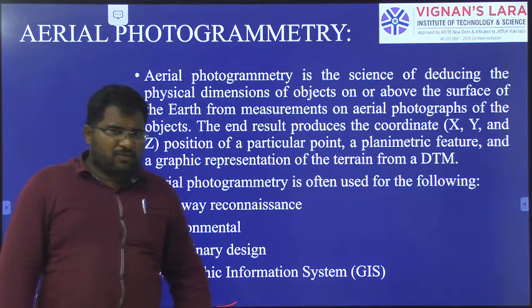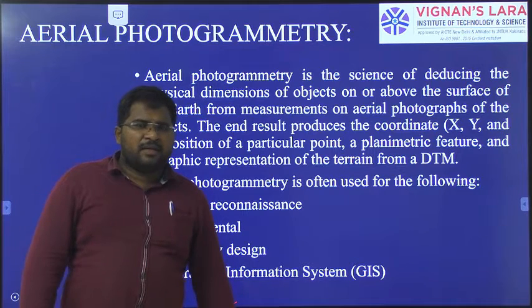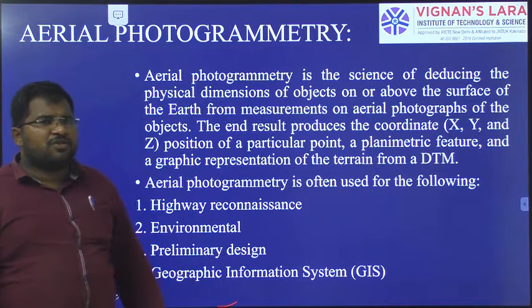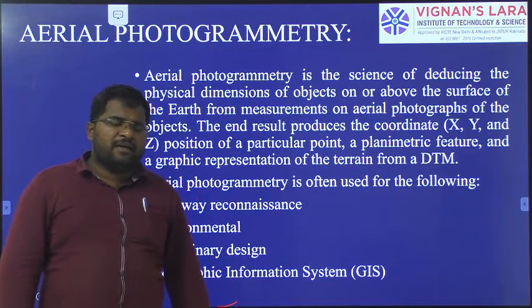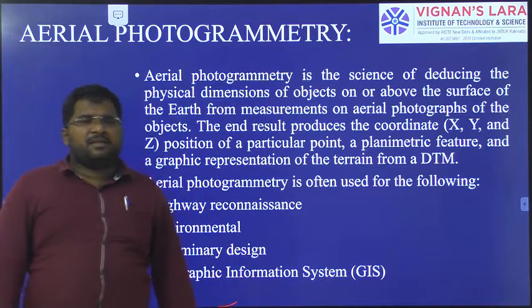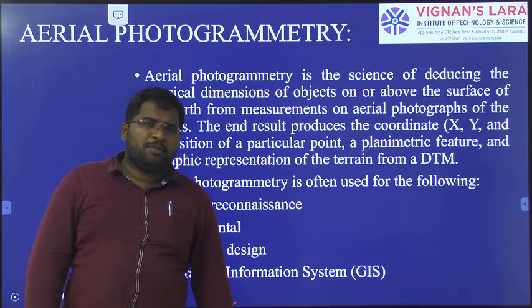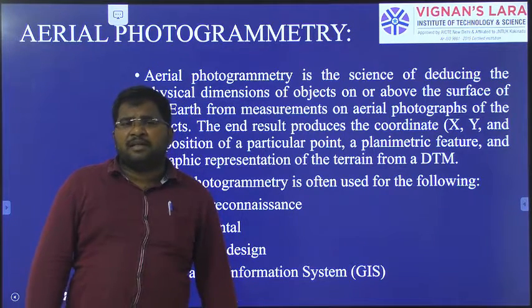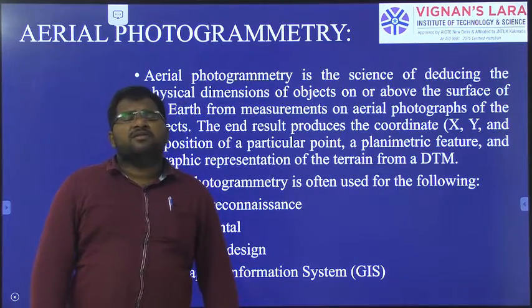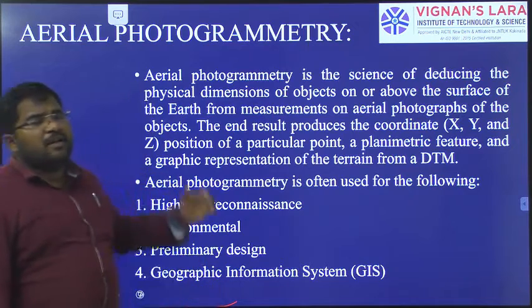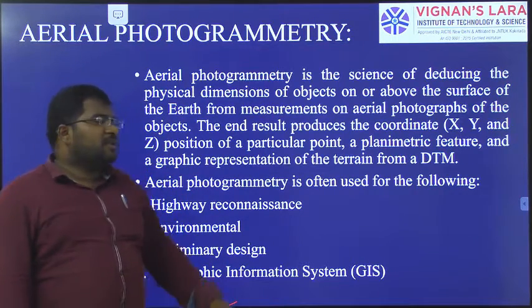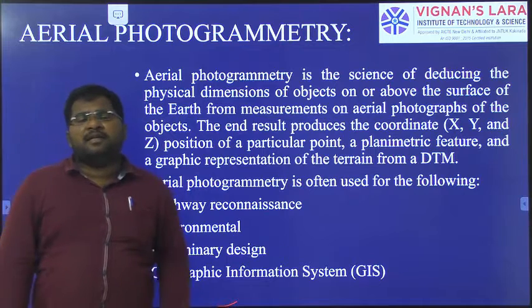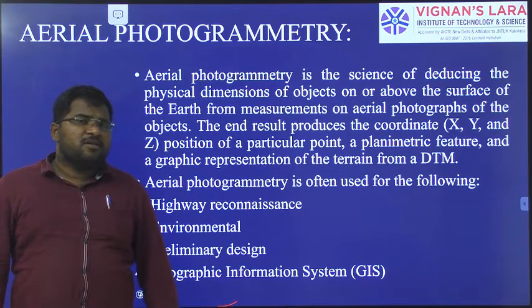In summary, today's class covered Unit Number 5 — photogrammetric surveying. We discussed the need for photogrammetric surveying and its two main types. Based on the position of the camera, if photos are taken from the ground level it is called terrestrial photogrammetry; if photos are taken from the air using a helicopter or aircraft, it is called aerial photogrammetry. In the next class we will cover the principles and details of aerial photogrammetry.